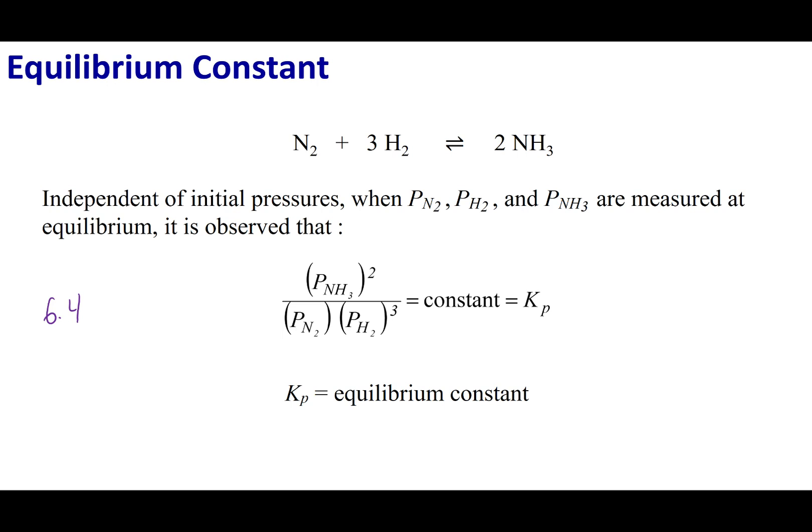Here's the take-home message. When you deal with Kc, you are entering in the concentration of the products and reactants. You want to make sure you enter these values in as molarity. However, Kc is unitless. It doesn't matter if you take the molarity and square it and divide it by the molarity cubed — Kc is just going to be a number. So plug in those concentrations, crank out a number, and disregard any units on that.